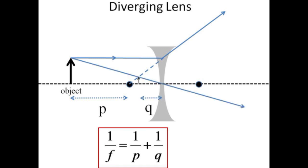A ray through the center of the lens goes unrefracted. A ray headed toward the far focal point emerges parallel to the optical axis. These rays can all be traced back to the virtual image with negative q value.